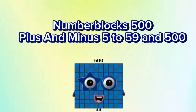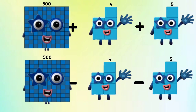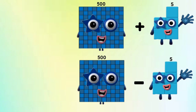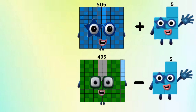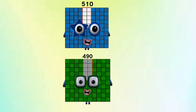Number Blocks 500 plus and minus Number Blocks 5 equals Number Blocks 505 and 495. Number Blocks 505 plus Number Blocks 5 and Number Blocks 495 minus Number Blocks 5 equals Number Blocks 510 and 490.